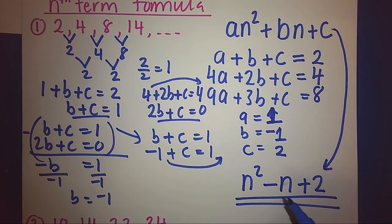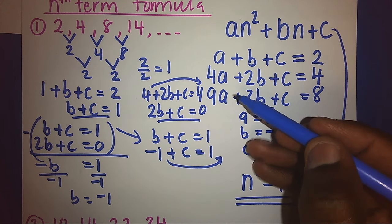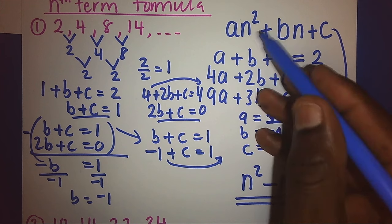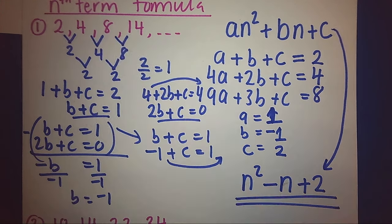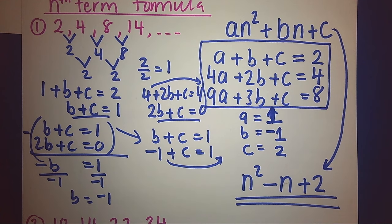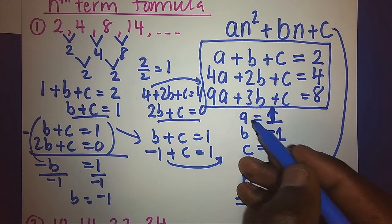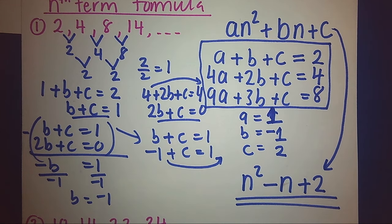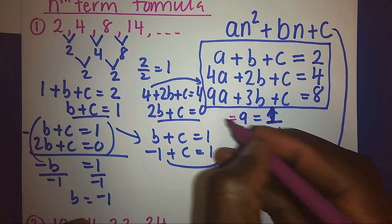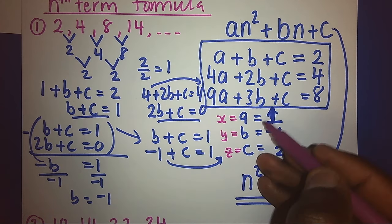Remember, once you have the general formula, you can create three equations. The easiest way is to use the first, second, and third terms from your sequence. Once you get the three equations, you can straight away put them in your calculator using the function for solving simultaneous equations of three unknowns, and it will give you the value of a, b, and c. In calculators, it shows a as x, b as y, and c as z.